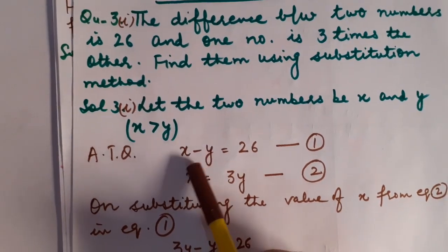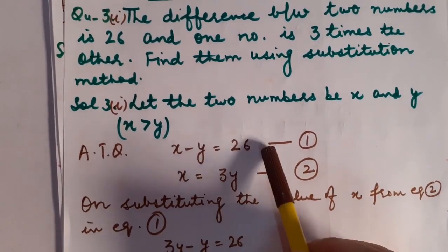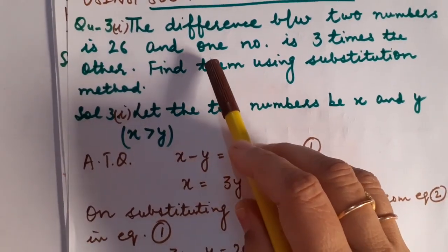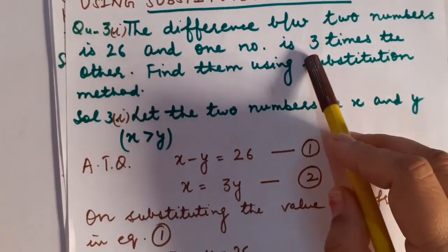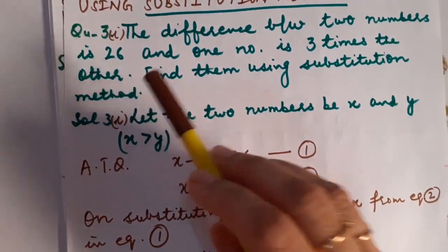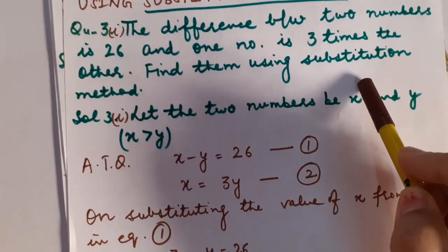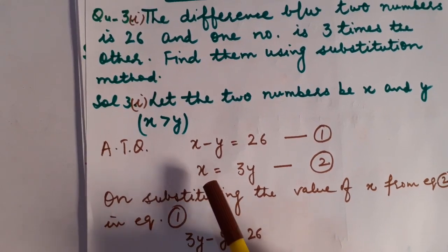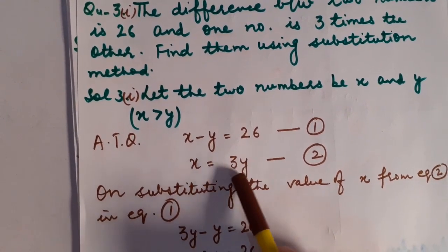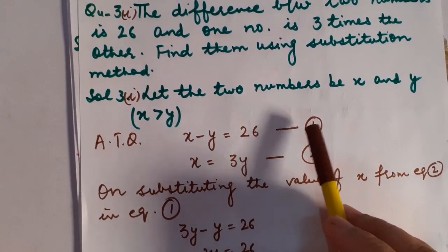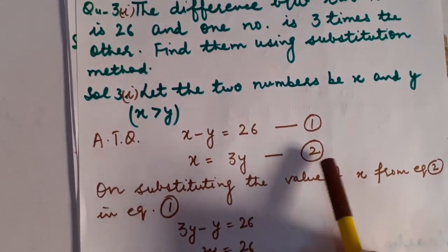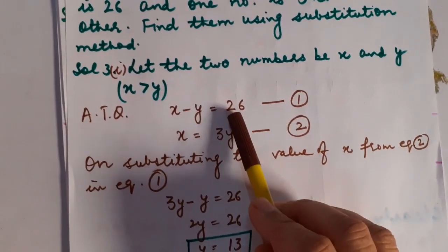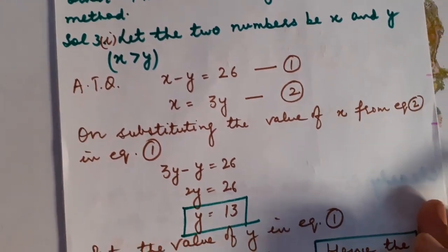According to the question, the difference between the greater and the smaller number is 26, that is X minus Y is equal to 26. Now, read the next line of the question: one number is three times the other. Definitely, the bigger number will be three times of the other. So X, which is the greater number, is three times of Y. This is equation number 1 and X = 3Y is equation number 2. Can I put the value of X from equation 2 into equation 1 to apply substitution method?